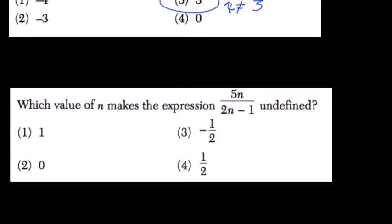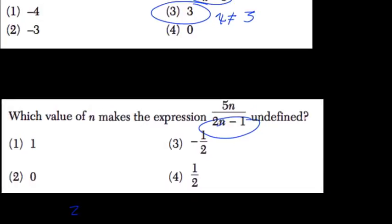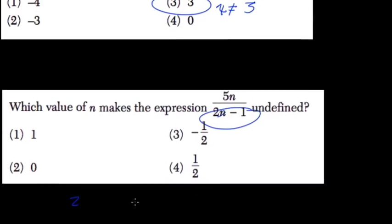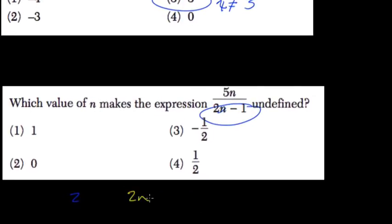What would make this undefined? So if you're struggling, this is just going to be equal to 0. When does 2n minus 1 equal 0?